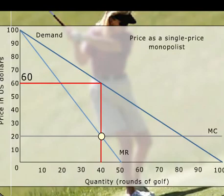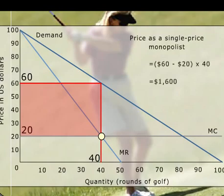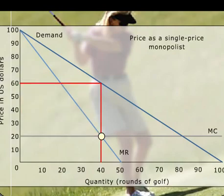At this price, a typical member would play 40 rounds each year, and the course would make $1,600 in profit. But pricing in this way does not capture profits from two additional sources.